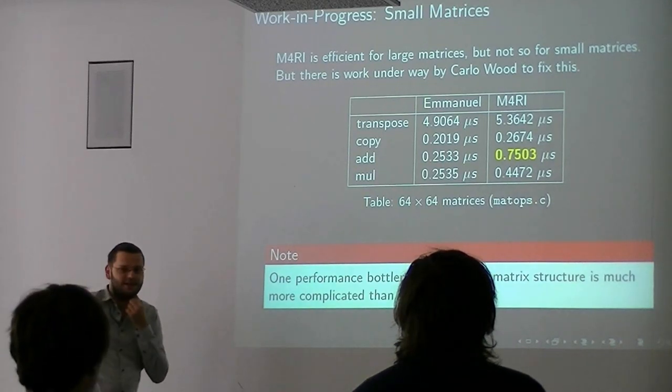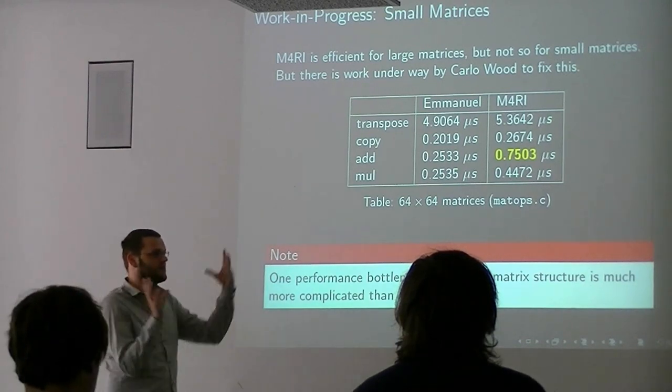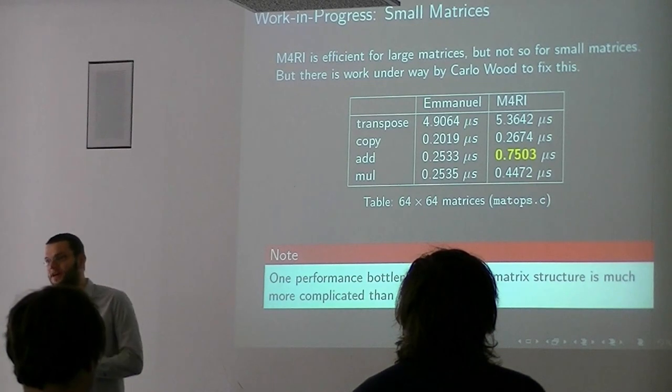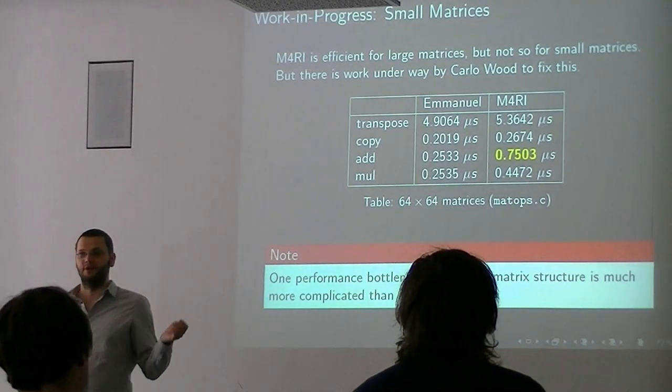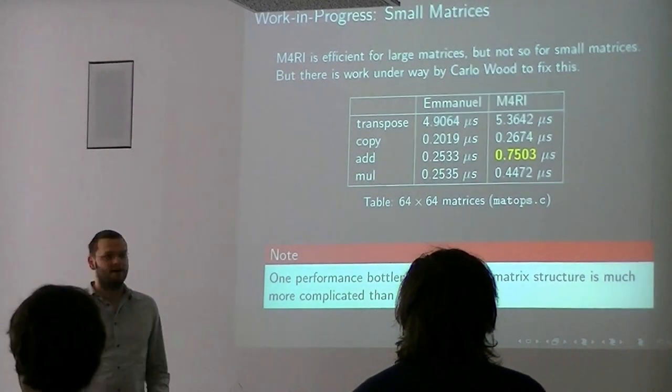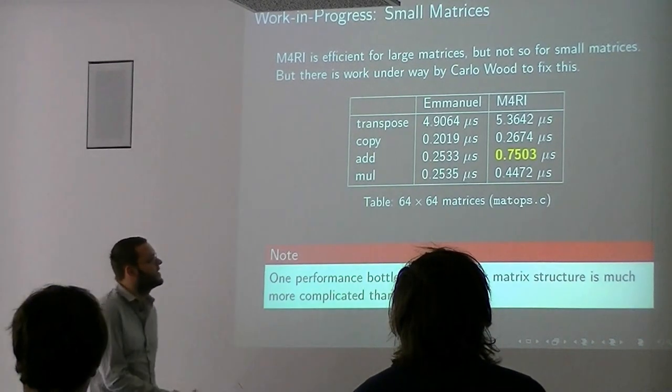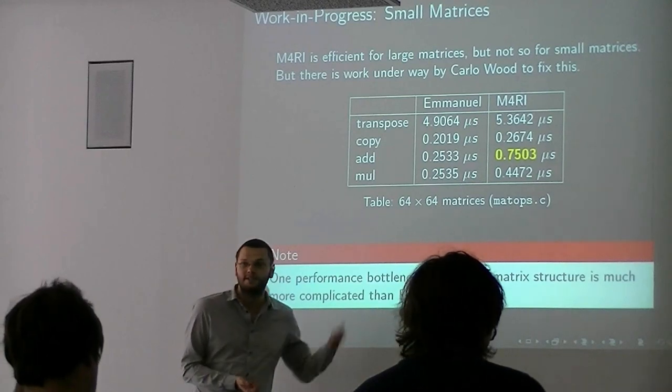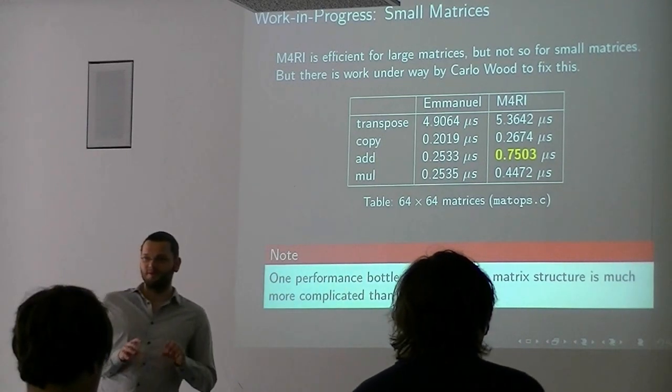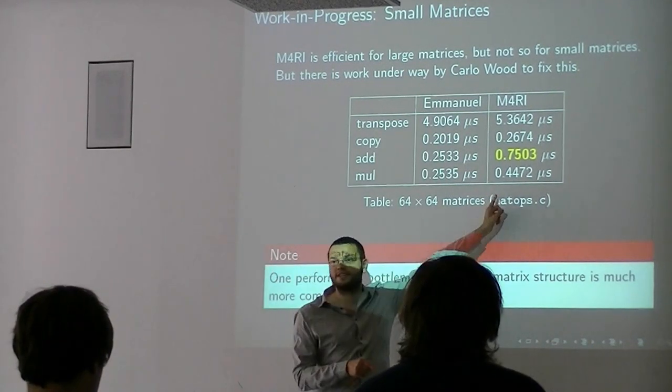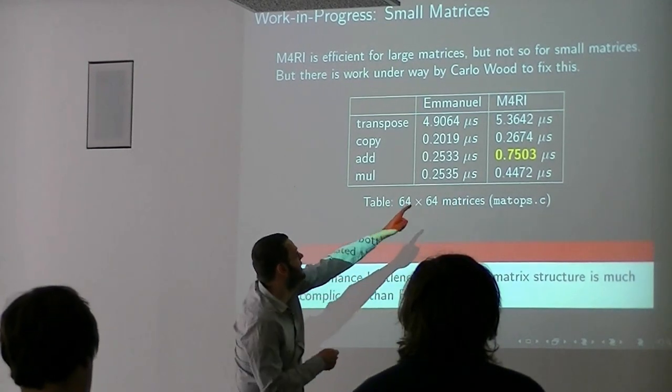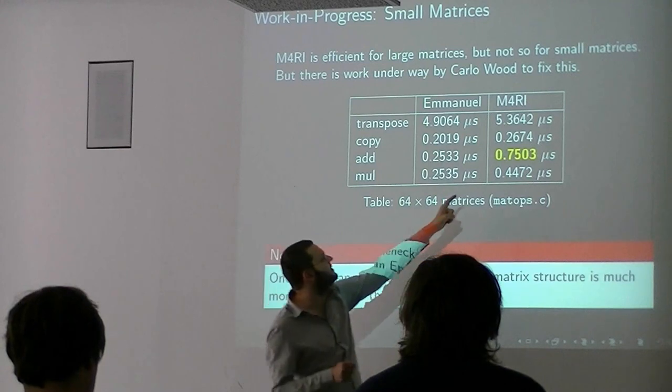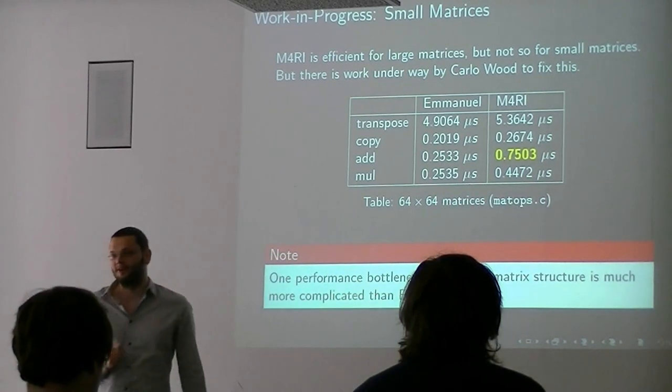So for small matrices, it was mentioned yesterday. We have quite a bit of data structures around matrices to support really large things. For instance, if your malloc doesn't support giving you a hundred gigabytes but it gives you a hundred times one gigabyte, that's something you can do. But this is overhead. This is stuff you have to do, and that really hurts when you're trying to do matrix multiplication for very small matrices like 64 by 64, which is something Clément Pernet cared about. He said, oh, this M4RI library that is supposed to be fast, let's try it.